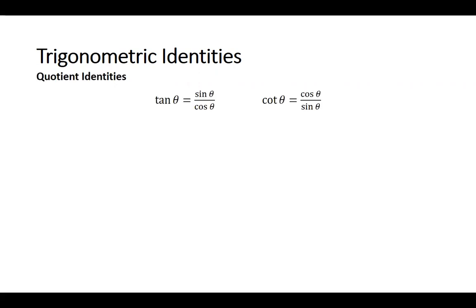First, the quotient identities. Tangent theta is equal to sine theta over cosine theta, and cotangent theta is equal to cosine theta over sine theta. So those are the quotient identities — we're dividing one trigonometric function by another trigonometric function.